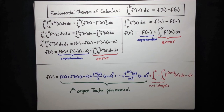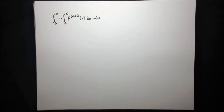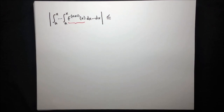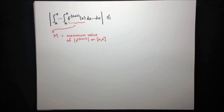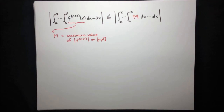But what about the Lagrange error bound? This expression for error doesn't look too familiar at this point, but it's actually only one step away from the Lagrange error bound. Let's write our error term again and see if we can place a bound on its magnitude. The highest possible value that this integral can come out to is the integral of the maximum magnitude of the n plus first derivative on the interval from a to x. So let's call that M, and replace the n plus first derivative with M inside the integral to form a bound. Since M is a constant, we can factor it outside of the integral.